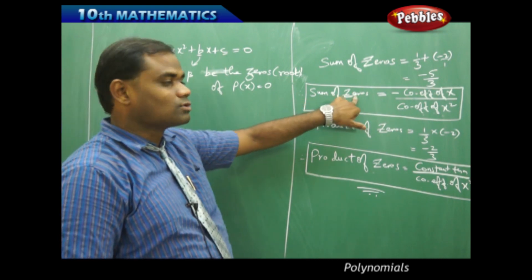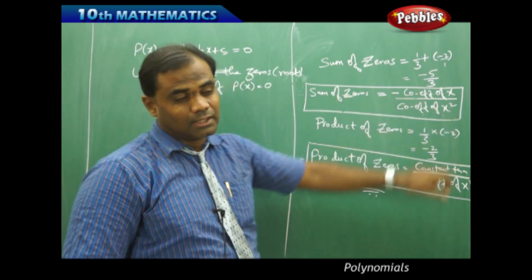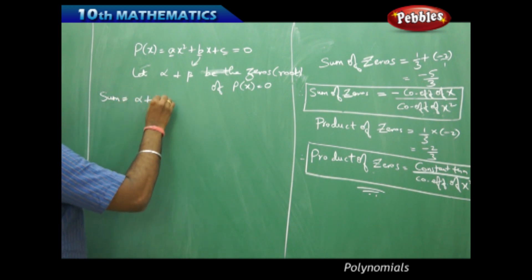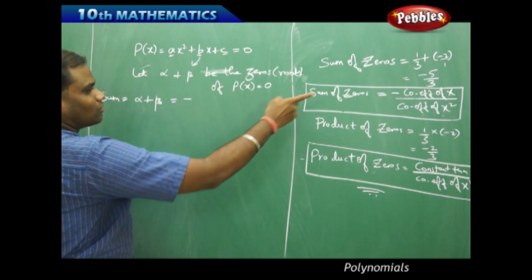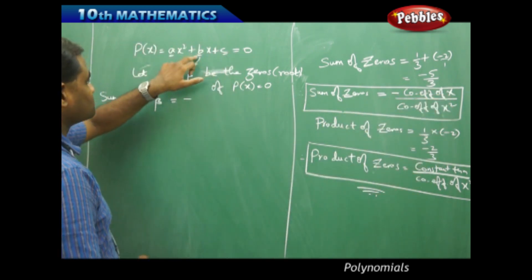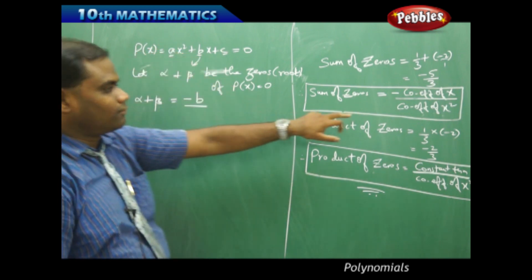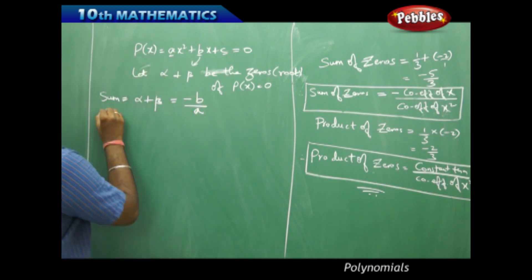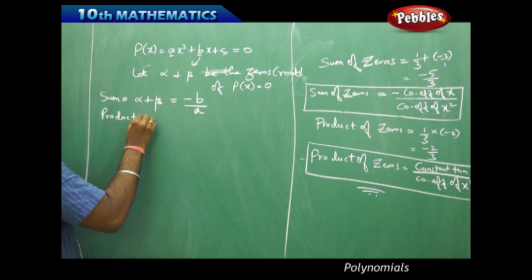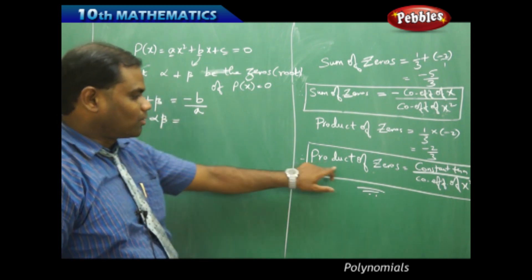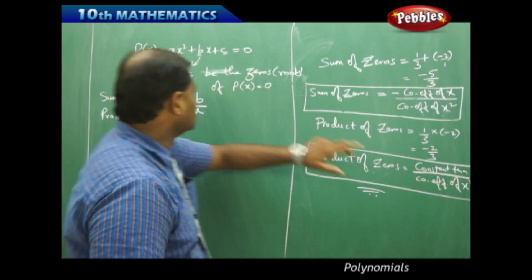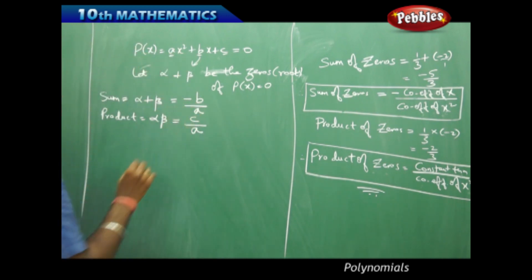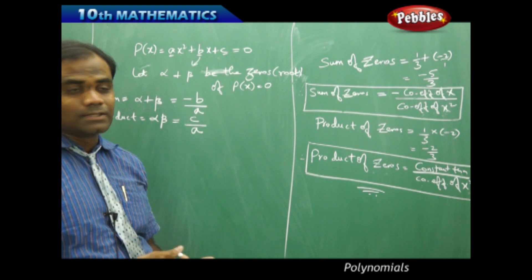Therefore the sum of roots, alpha plus beta, equals negative b over a, where b is the coefficient of x and a is the coefficient of x squared. Similarly, the product of zeros, alpha times beta, equals c over a, where c is the constant term and a is the coefficient of x squared.